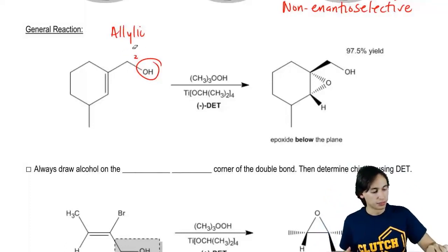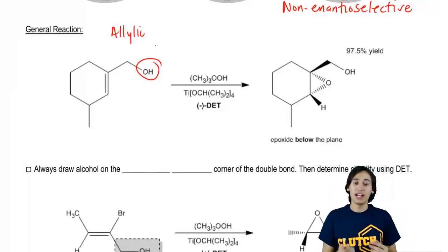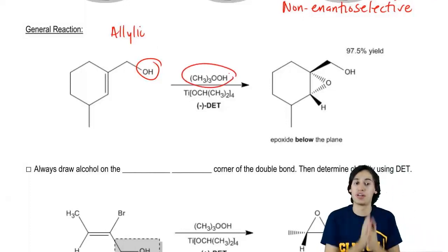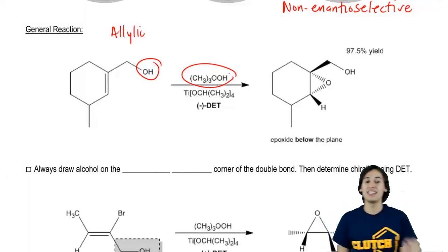So we have an allylic OH and when we react it with a peroxide, this is the oxidizing agent. This is what's going to make the O. And then a titanium catalyst.